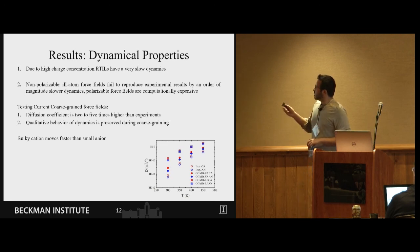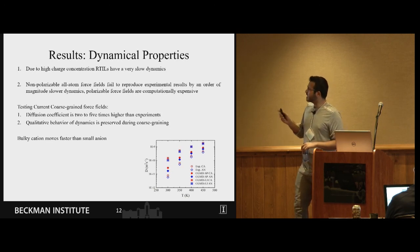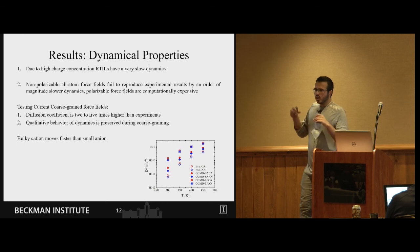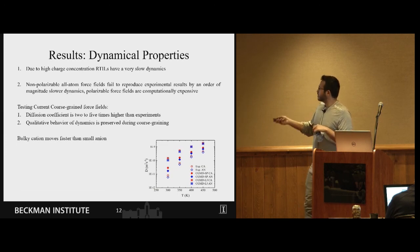We calculated the diffusion for different systems and we saw that the bulky cations, the large cations, move faster compared to small anions which is due to the high charge concentration on the small anions and caging effect inside ionic liquid. We saw that this qualitative behavior is preserved during the coarse graining and even though there is a two times error in the diffusion magnitude between experiment and coarse graining force field, they are still having the same qualitative behavior.